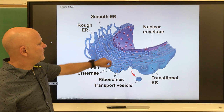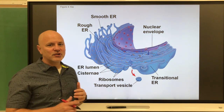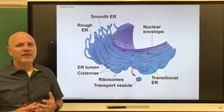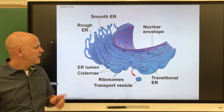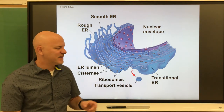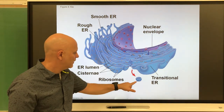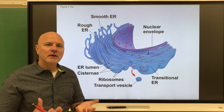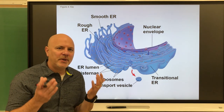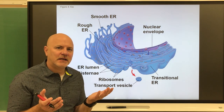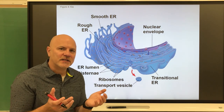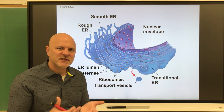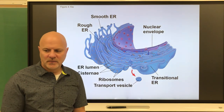The rough endoplasmic reticulum is an organelle that packages proteins within vesicles. A vesicle is a small membranous sac. If we were to peer inside of a cell and see a vesicle, it would look like a bubble with some stuff in it. The rough ER is called rough because it is studded with ribosomes.